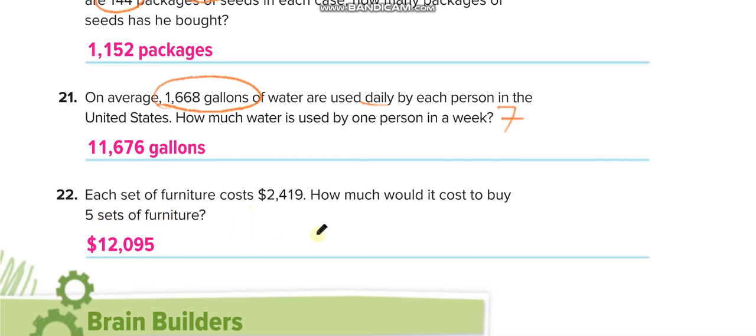$2,419. For all these questions, you can write it here and multiply like this. I will show you now: 2,419 times 5, and then you will multiply it here and you get the answer.